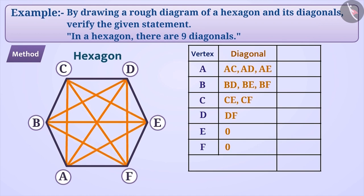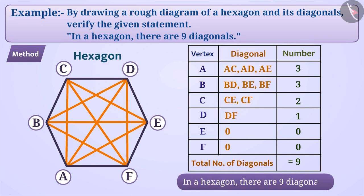Thus, we will now count all the diagonals. Here, 3 plus 3 plus 2 plus 1 plus 0 plus 0 is equal to 9. That is, total 9 diagonals have been formed. In this way, we can say that a maximum of 9 diagonals can be drawn in a hexagon. With this, the statement that in a hexagon, there are 9 diagonals gets verified.